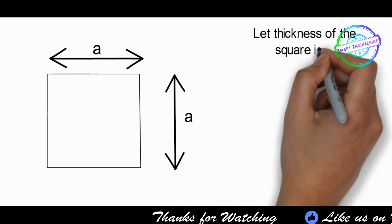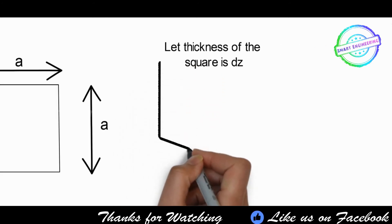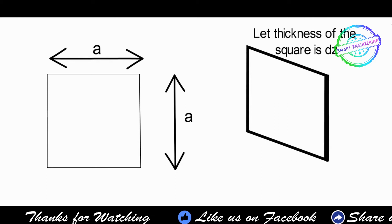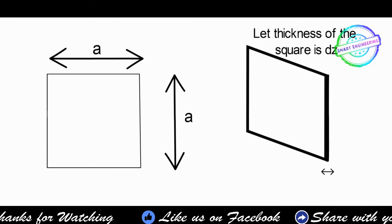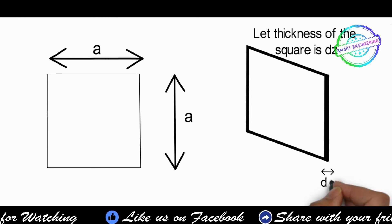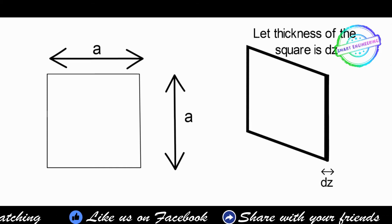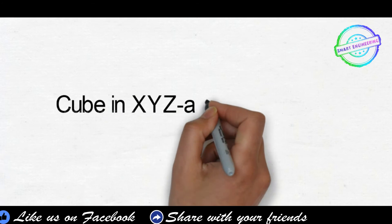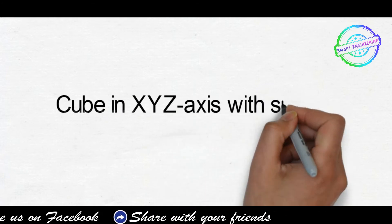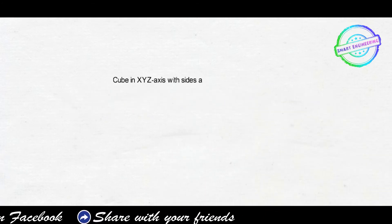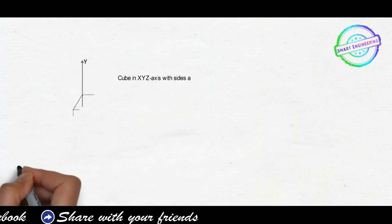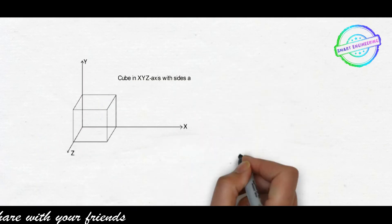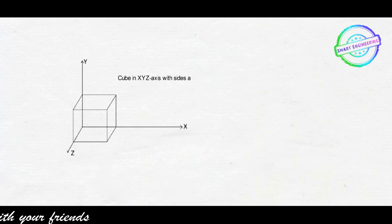We can assume one plate with thickness dz. Extending this, we consider one cube with x, y, z axes, where a square of side a has thickness dz, and z varies from 0 to a. This gives the volume of the cube using the triple integral.